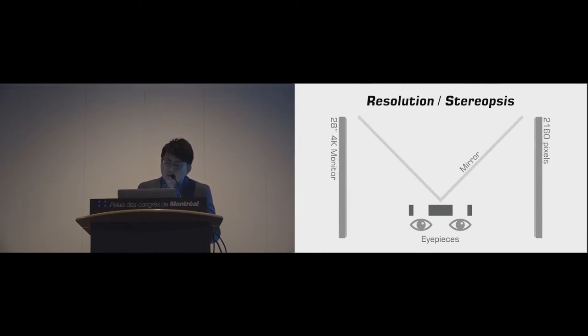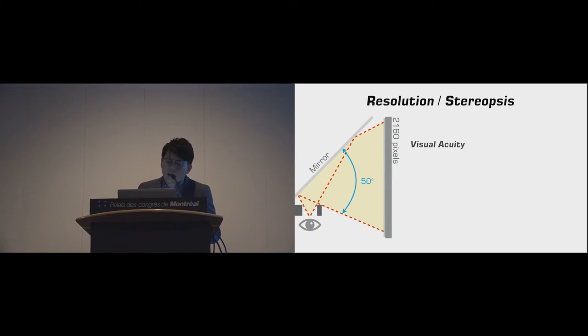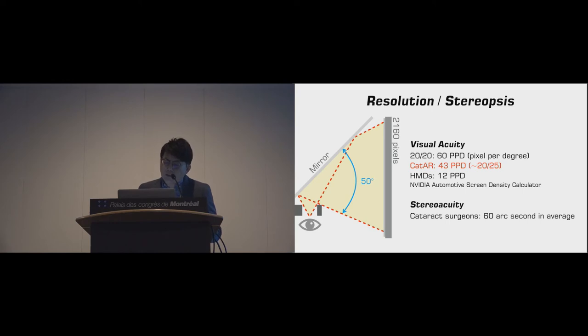Eye doctors are extremely concerned with the image quality in simulators because they use microscope frequently. In CATAR system, we use dual 4K monitors as image sources. The distance between eye and monitor was 32 centimeters to provide 50-degree viewing angle. A display system with 60 pixels per degree resolution can generate 20-20 vision image. CATAR has 43 PPD resolution and is much higher than other head-mounted displays. The stereo accuracy of CATAR surgery is around 60 seconds of arc. The CATAR system can provide 42 seconds of arc stereopsis and is sufficient for surgical training.